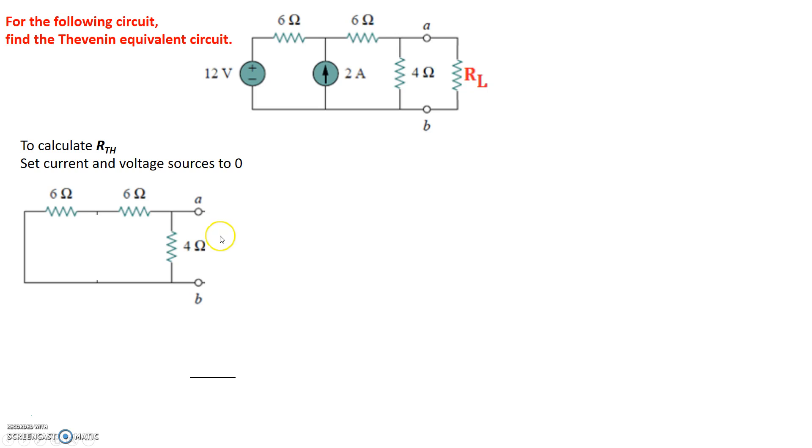The Thevenin resistance is basically the resistance seen from the terminal across AB right here. I see 4 ohms and then I see two 6 ohm resistors in series with each other. This basically reduces to 12 ohms and 4 ohms. The 4 ohm resistance is across AB, the 12 ohm resistor is also one end of 12 is on A and the other end of 12 is on B. So 4 and 12 are in parallel with each other. Using parallel resistance, we can calculate the Thevenin resistance as 4 times 12 divided by 4 plus 12, which leads us to 3 ohms. That's the Thevenin resistance.